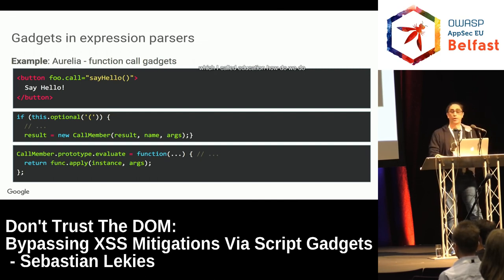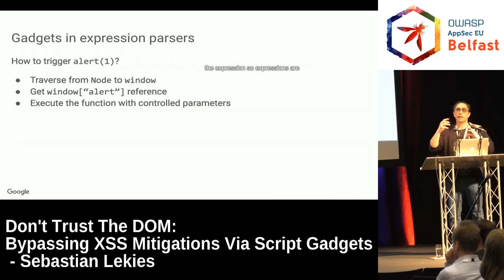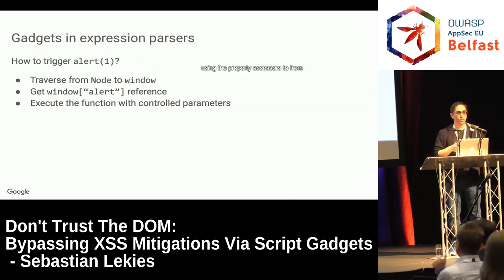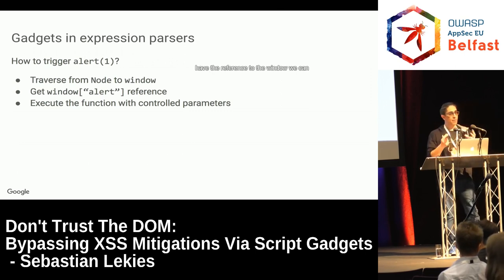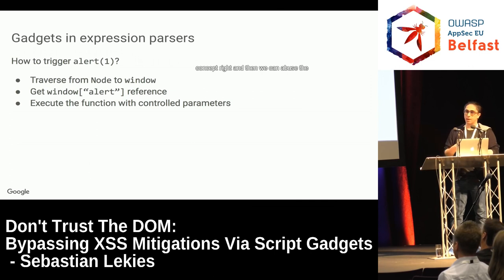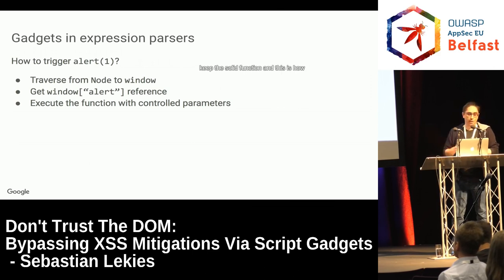Those snippets of code are pretty benign on their own — they only implement the functionality of the framework. However, we can still turn them into arbitrary code execution. Expressions are evaluated in a certain context, often some kind of element in the DOM or a template element. We can traverse from that element to window using property accessors. Once we have a reference to window, we can abuse the expression language to get a reference to the alert function of the window — and then abuse the function call gadget to execute it.